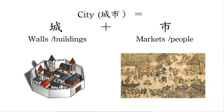In Chinese, the characters for 'city' are made of 'cheng,' which represents building and physical capital, and 'shi,' which means people and the market.